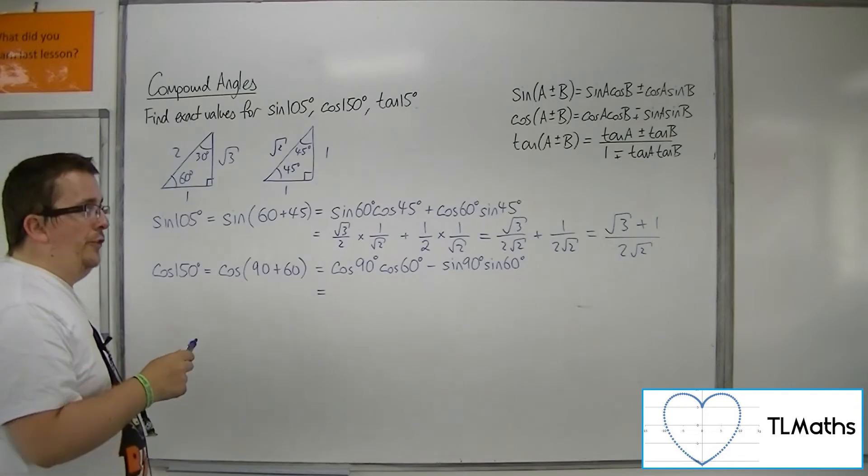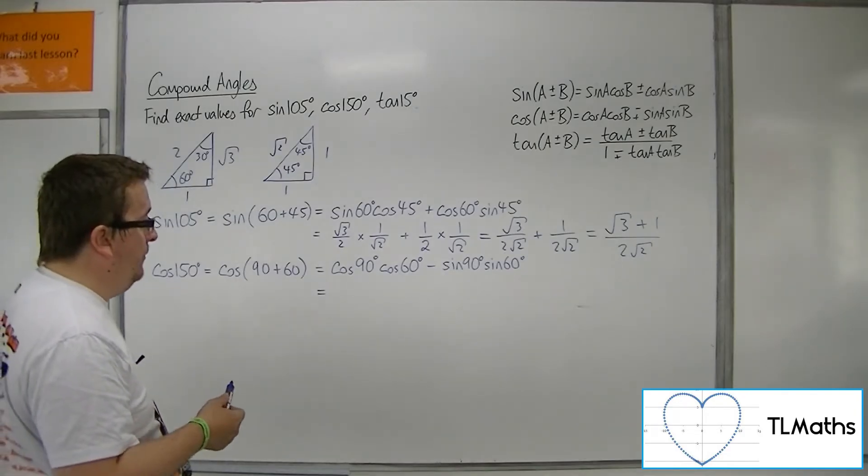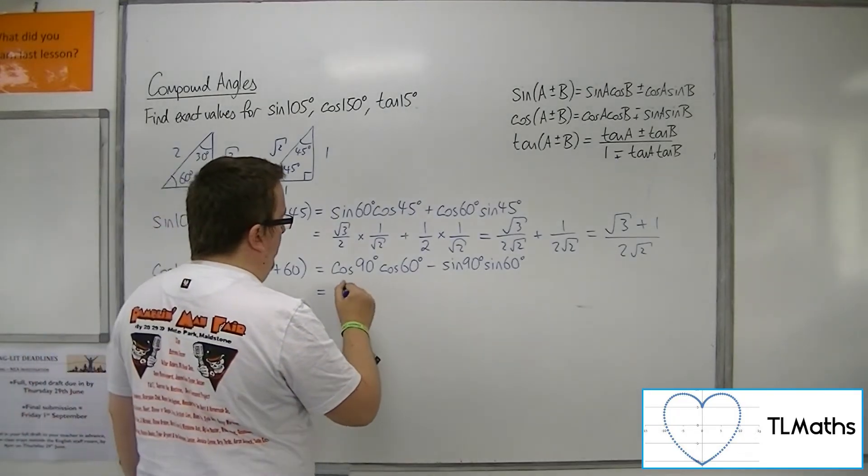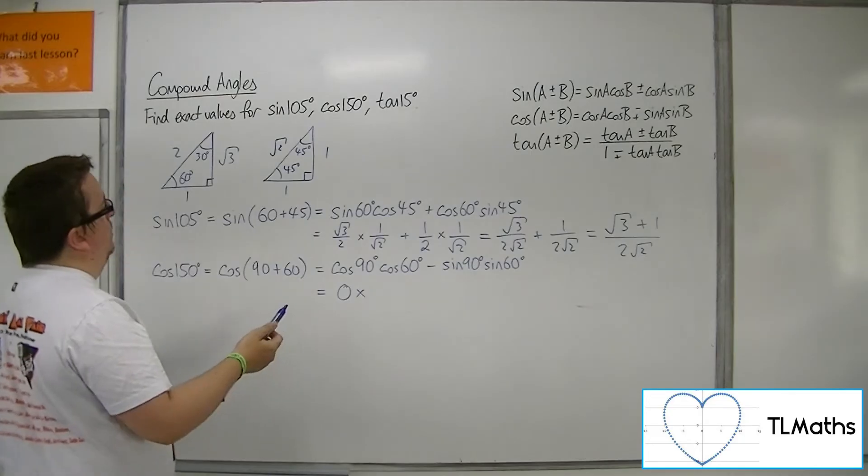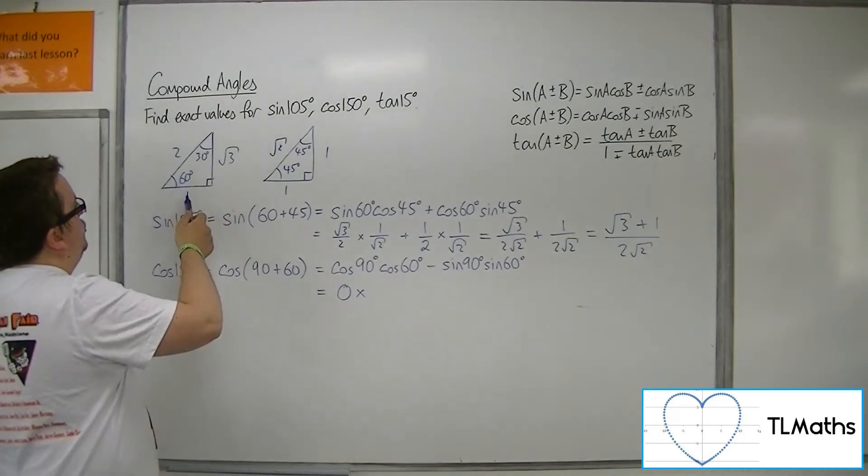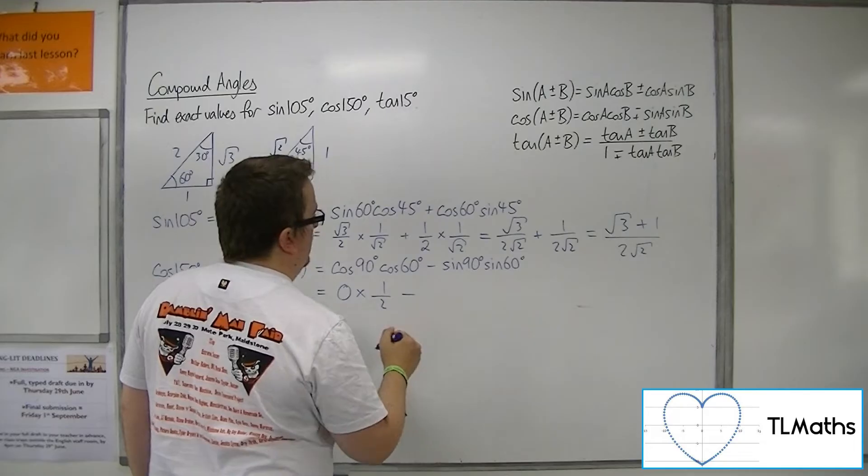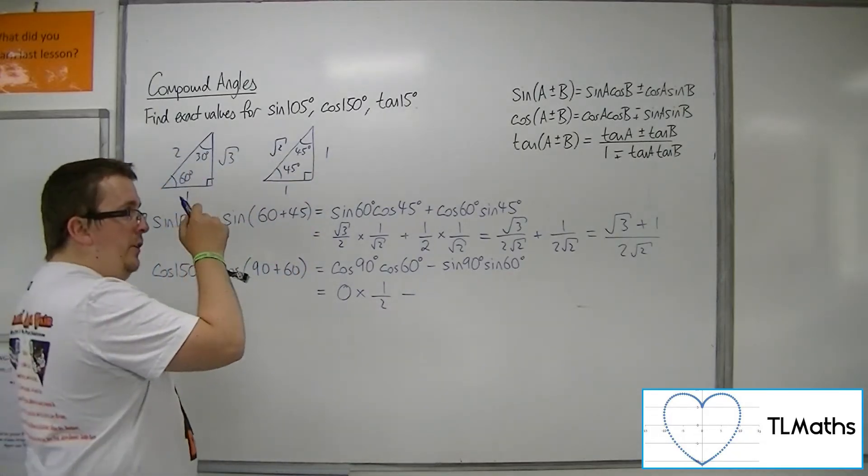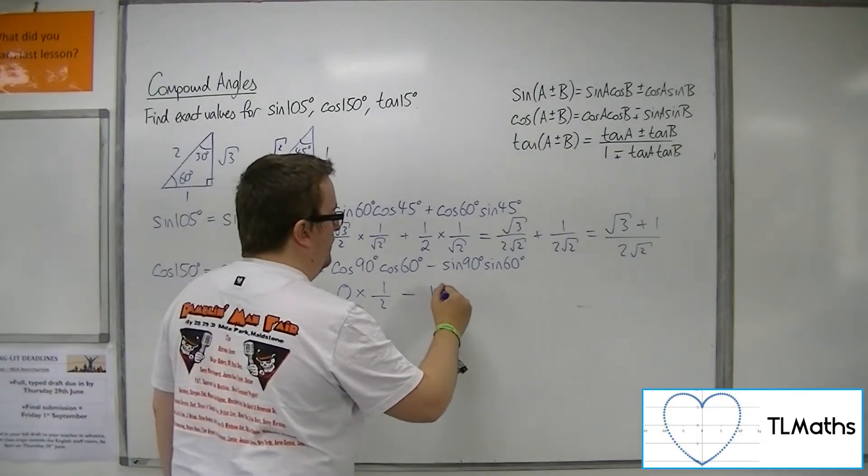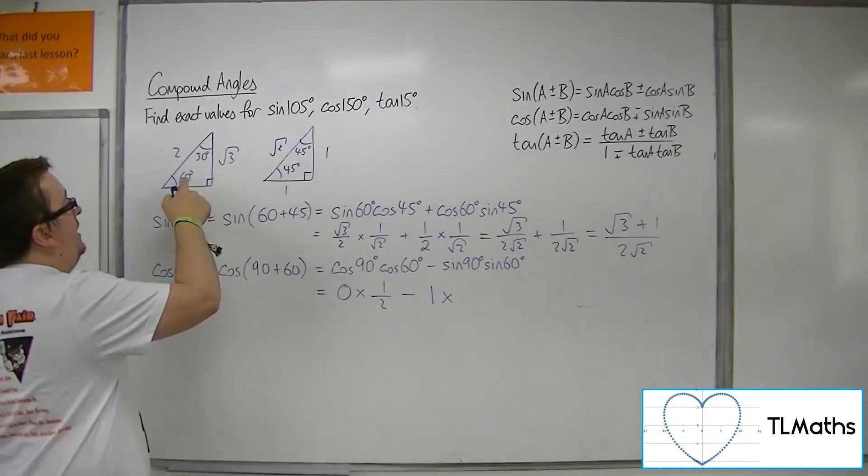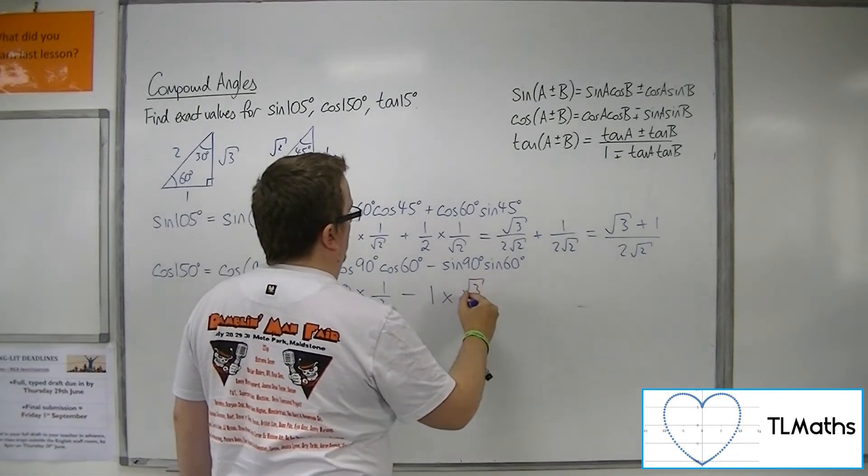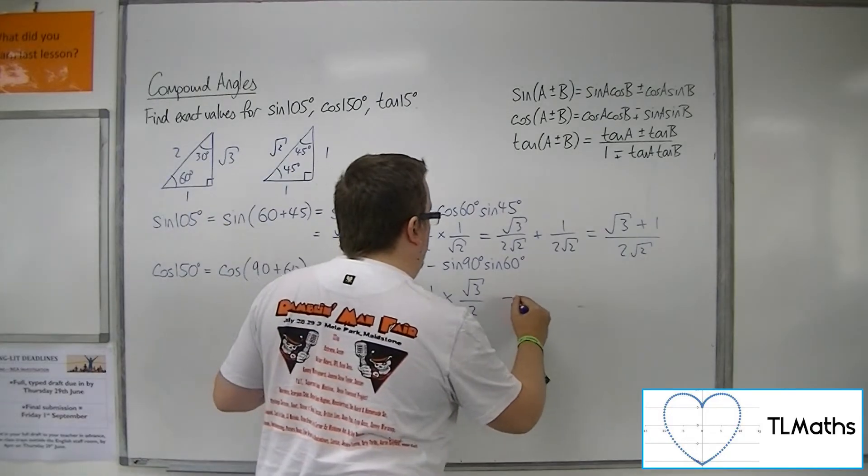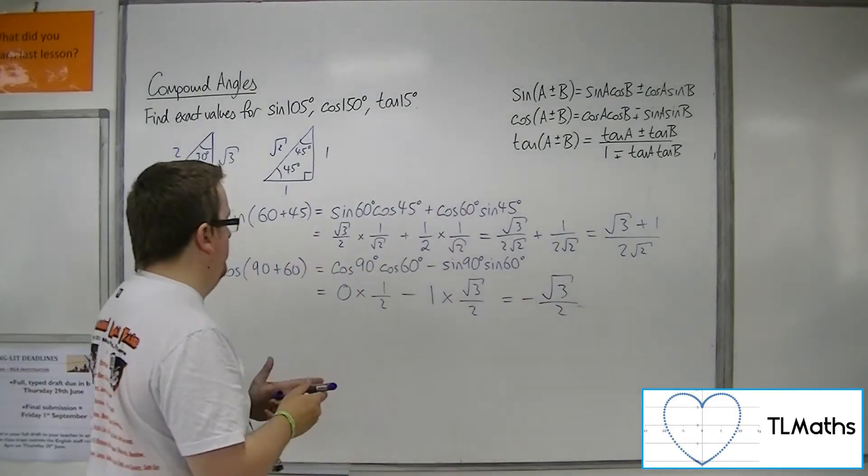Cosine of 90 degrees, thinking about the curve, is 0. So that's 0 times, well, we'll find cos of 60, so that's adjacent over hypotenuse, 1 over 2. Sine of 90 is actually 1, and sine of 60, opposite over hypotenuse, is root 3 over 2. So this is just minus root 3 over 2.